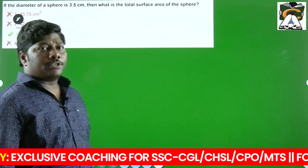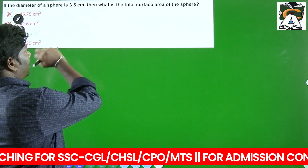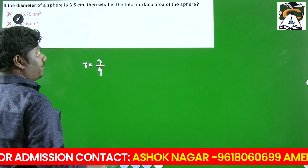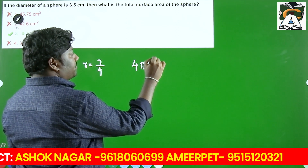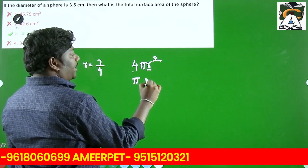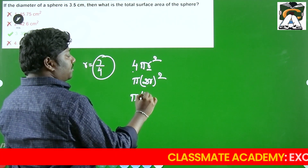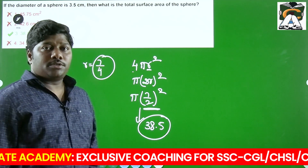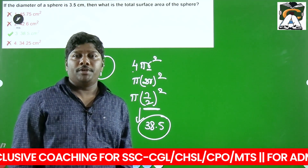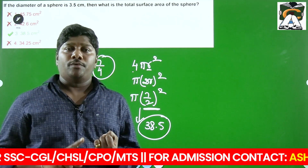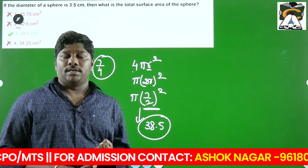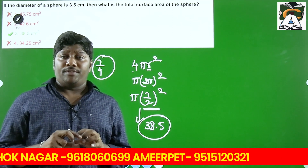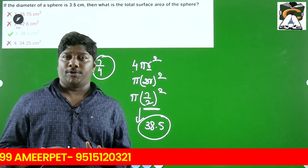The last question: if the diameter of the sphere is 3.5, what is the total surface area? Diameter 3.5 means radius = 3.5/2 = 7/4. The total surface area is 4πr². Now r = 7/4, so r² = 49/16. We know when radius is 7/2, the area of a circle (πr²) is 38.5. So 4πr² = 4 × 38.5 = 154, then adjusted for r = 7/4 gives 38.5. Without substituting values, you can do this directly. All you need to remember is: when radius is 7, 14, 21, 3.5, or 10.5 — what is the circumference and area? If any one of the three values is given, you must state the other two immediately.